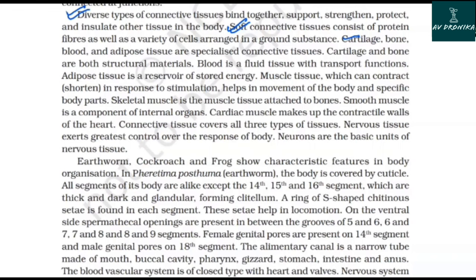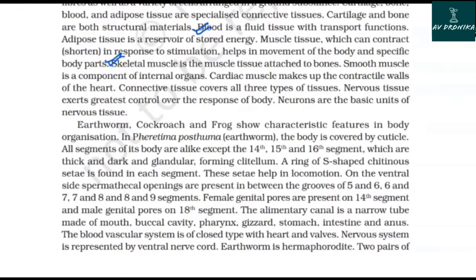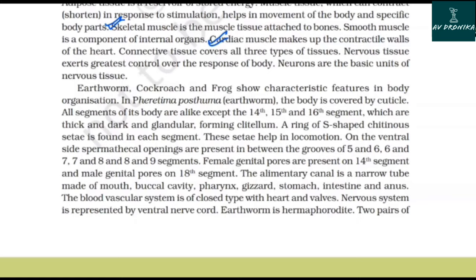Muscle tissue, which can contract in response to stimulation, helps in movement of the body and specific body parts. Skeletal muscle is attached to bones; smooth muscle is a component of internal organs; cardiac muscle makes up the contractile walls of the heart. Connective tissue covers all three types of muscle tissue. Nervous tissue exerts the greatest control over the body's response to changing conditions. Neurons are the basic units of the nervous system.